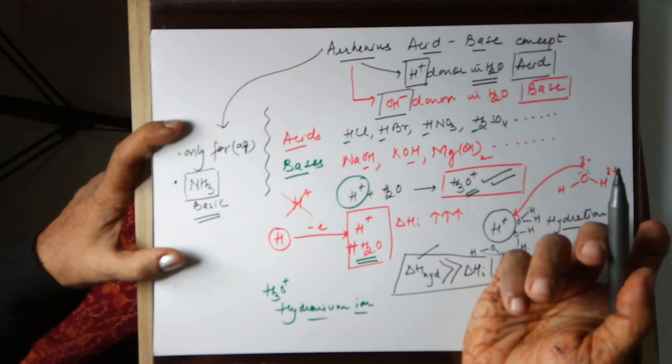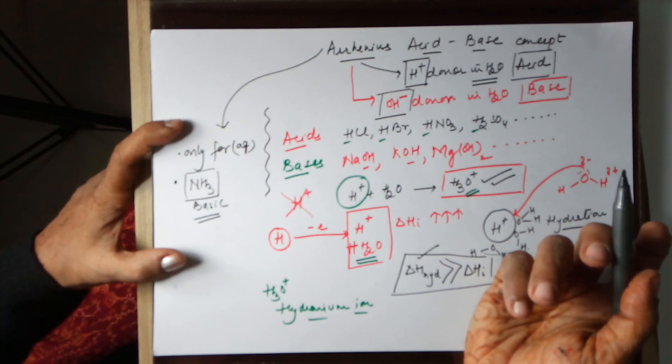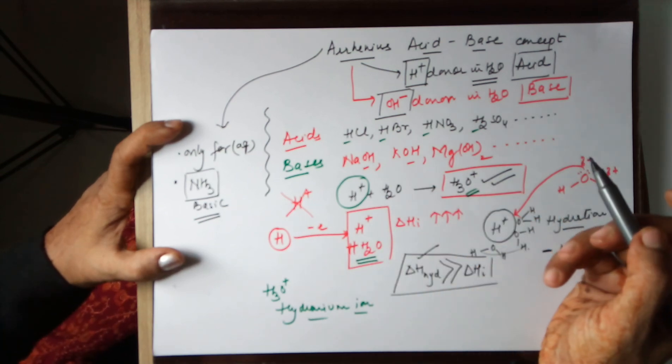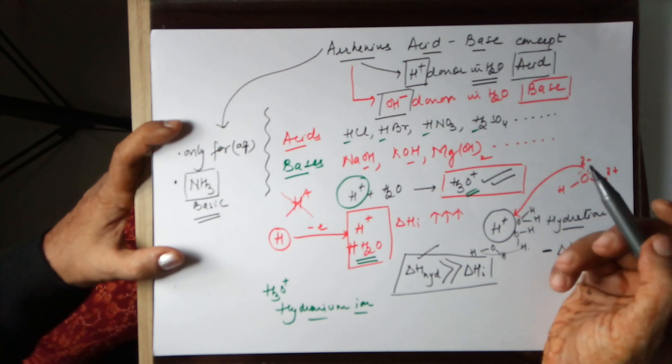So the second concept was introduced, which was related to only protons—that is your Bronsted-Lowry concept. The Arrhenius concept was ruled out and we moved on to the second concept known as the Bronsted-Lowry concept. I rest my class here. Thank you.